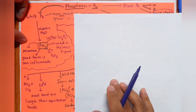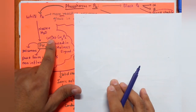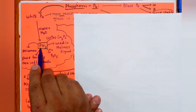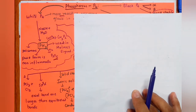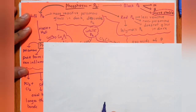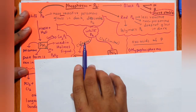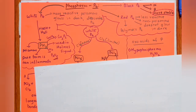White phosphorus reacts with NaOH and H2O to form phosphine (PH3). Properties of phosphine: poisonous; pure form is non-inflammable. It reacts with CuSO4 to form Cu3P2. It is used in Holmes signals. With oxygen it forms P2O5.